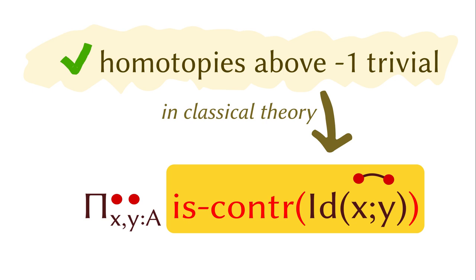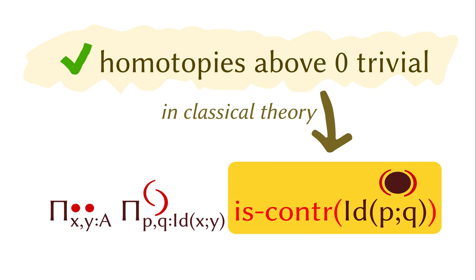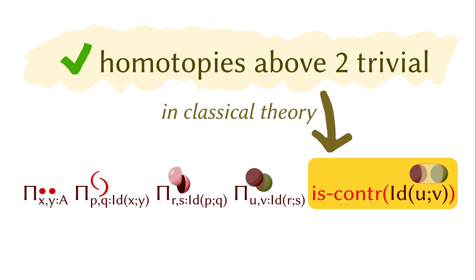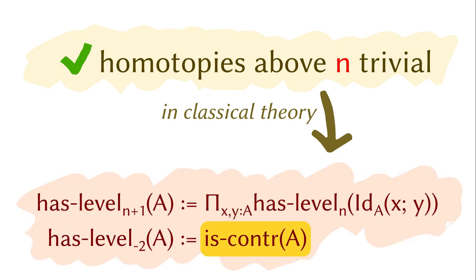A similar argument works for truncation to level 0, level 1, level 2, and so on. This leads to our recursively defined formula and explains why we have contractibility in the base case.